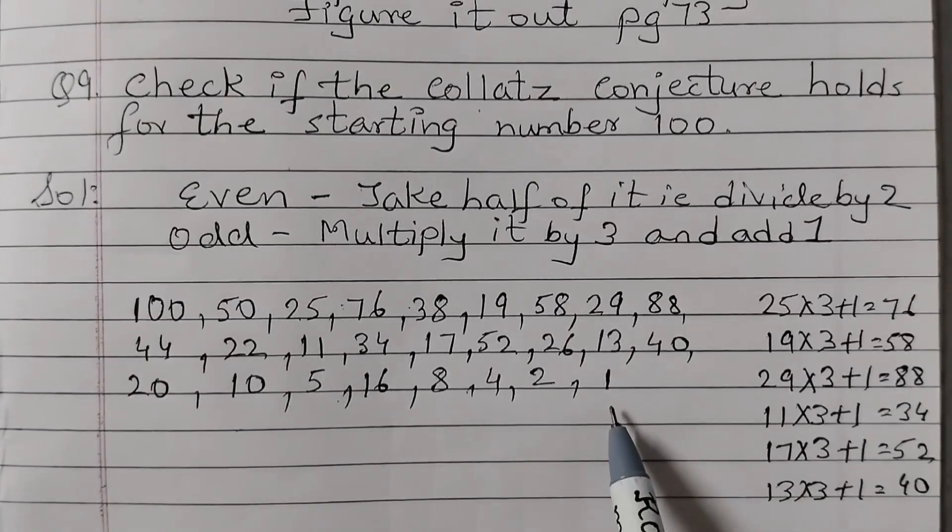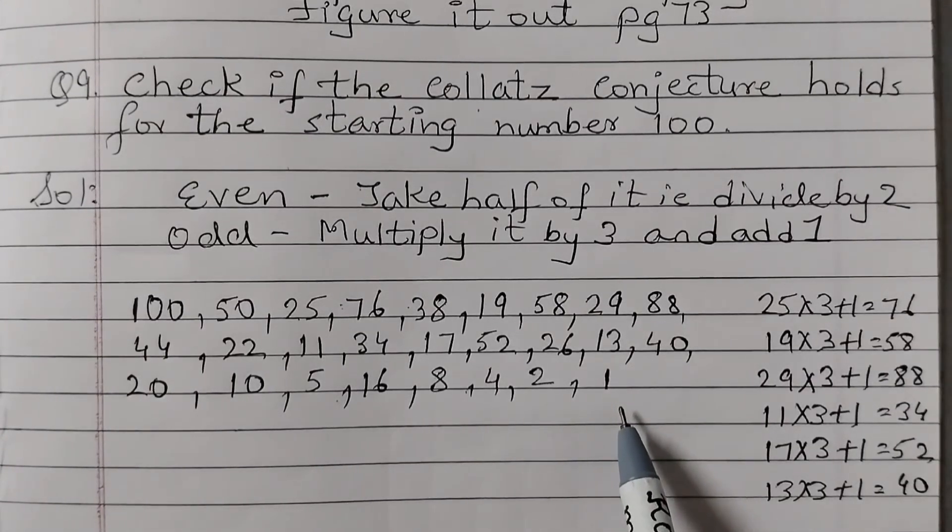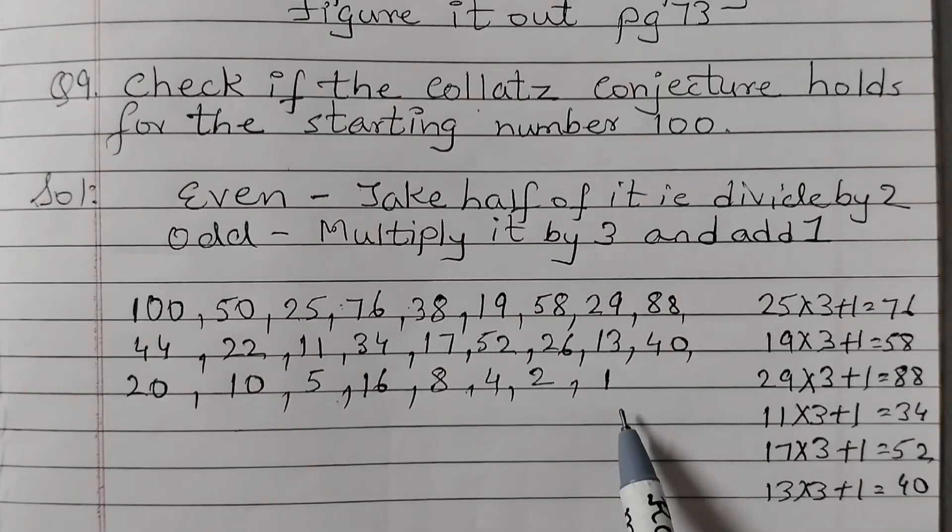And we have reached 1. So the answer is yes. The Collatz conjecture holds for the starting number 100.